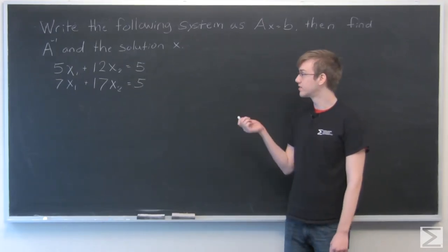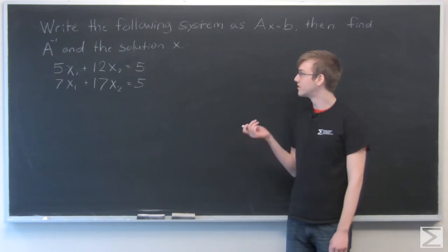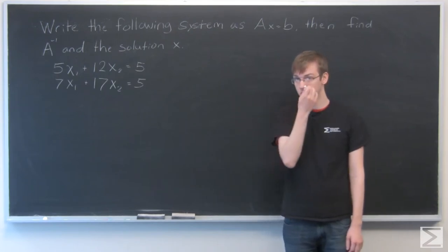For this problem we need to write this system in the form of AX equals B, and then we need to find A inverse and the solution X.